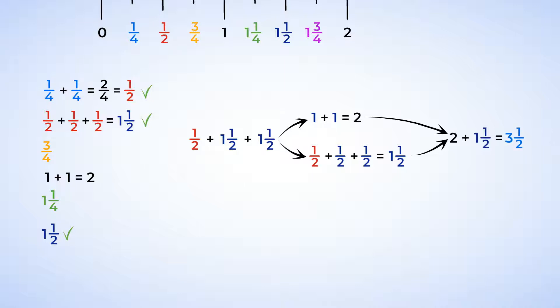Next, we can add the fourths together. We have three-fourths plus one and one-fourth. The one-fourth and three-fourths combine to create a whole, right? So now we have two wholes.